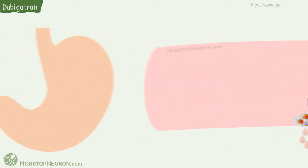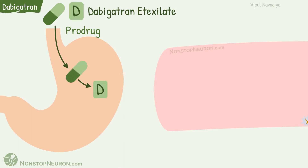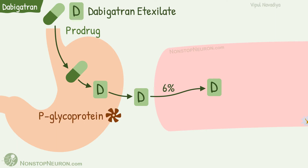Now let's bring in dabigatran etexilate. It is a prodrug and is given in the form of a capsule. The capsule should be swallowed intact. Its oral bioavailability is low, about 6%. Dabigatran is a substrate for P-glycoprotein, which secretes some of the absorbed drug back into the lumen.